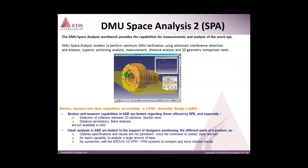However, sections cannot be saved inside assembly design — there will be some limitations compared to those offered by SPAR. In assembly, there are limitations to saving. We can create a section but we cannot save it or export the 2D geometry. As you can see in the picture in preview mode, this cannot be exported, and especially detection of collision between 2D sections, section slices, and distance precision band analysis are not available in ASD.